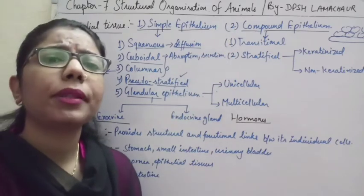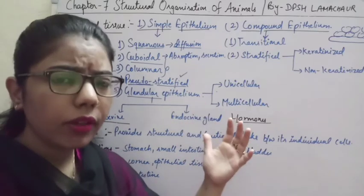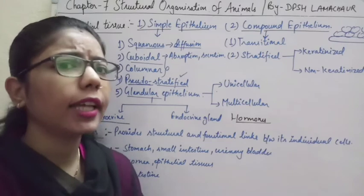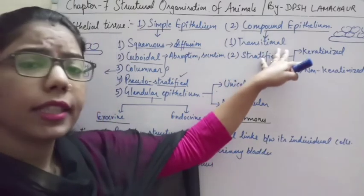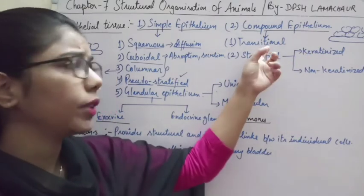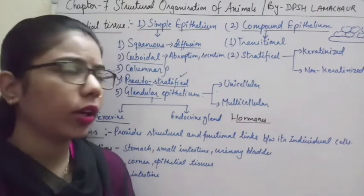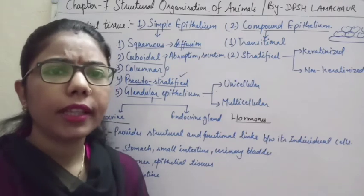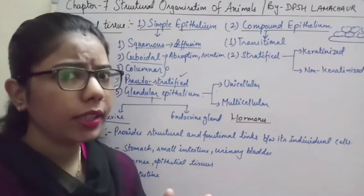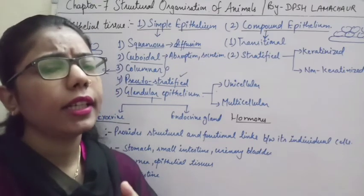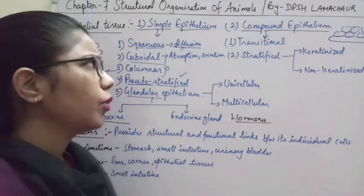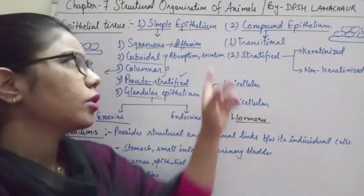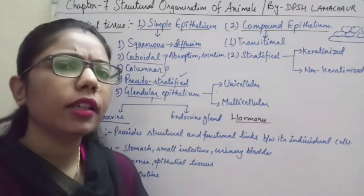Compound epithelium is divided into two types: transitional and stratified. Transitional epithelium has a shape that is not fixed — it can change. For example, in the urinary bladder, when urine fills it the tissue stretches, and when urine passes the bladder returns to its original shape. Transitional epithelium is found in the urinary bladder and ureter.